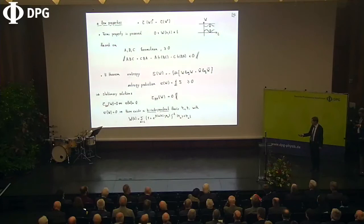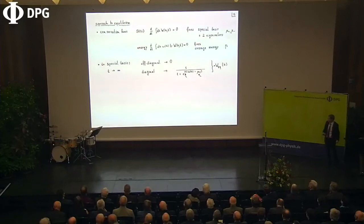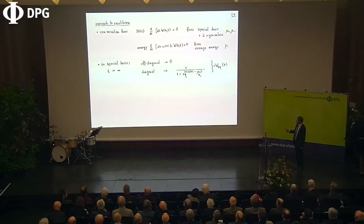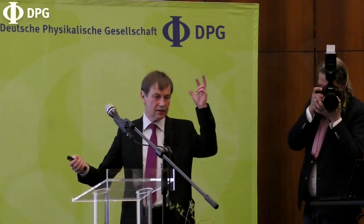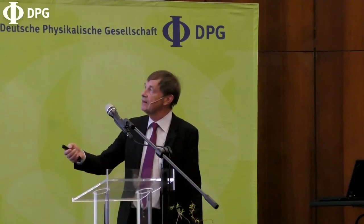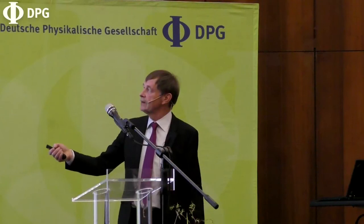From this analysis there are two conservation laws: SU(2) symmetry, which fixes a particular basis, and energy conservation, which fixes beta. Counting: there are two eigenvalues giving the chemical potentials; energy conservation fixes beta; the initial condition fixes both the basis and the chemical potentials and the inverse temperature. In that particular basis the off-diagonal terms vanish, while the diagonal terms go exactly to the Fermi-Dirac distribution — the equilibrium distribution of the gas.